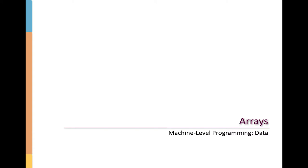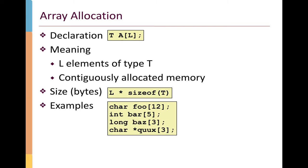We're going to talk about arrays and how they're represented internally in memory. To refresh your memory, an array is declared by defining the type T, giving the array a name — here it's called A — and then specifying how many elements are in the array. We're going to start out by talking about single-dimensional arrays. Arrays are contiguously allocated in memory, so one element right after the other.